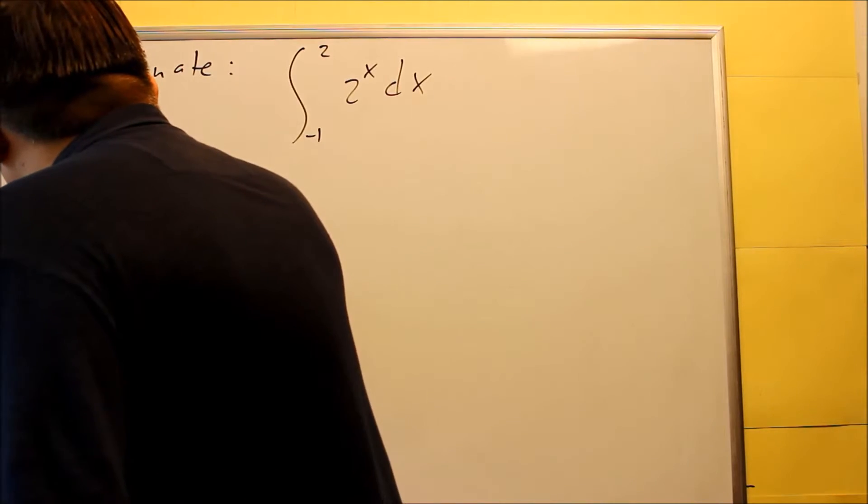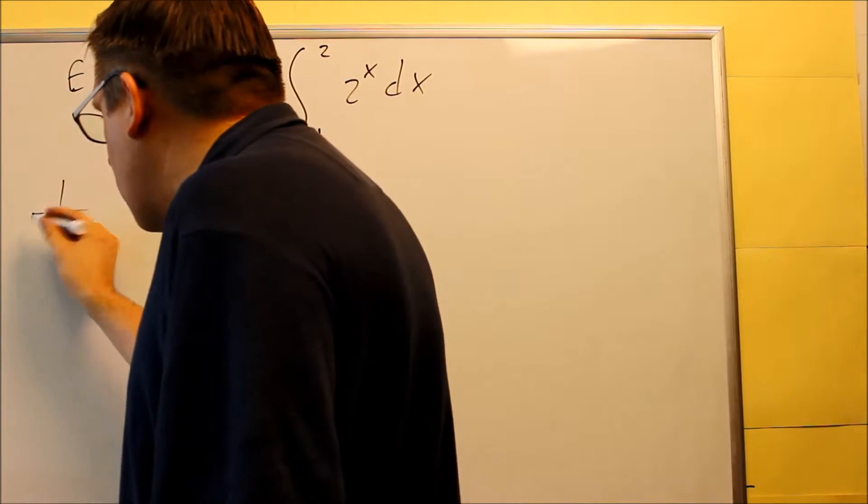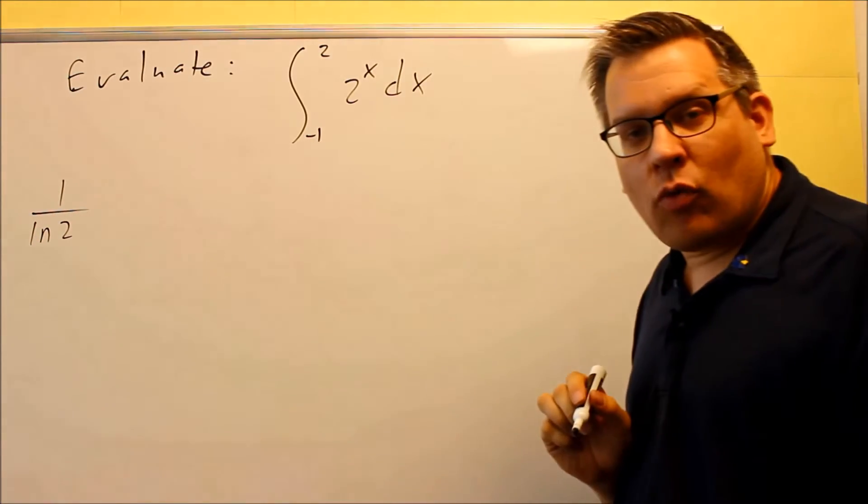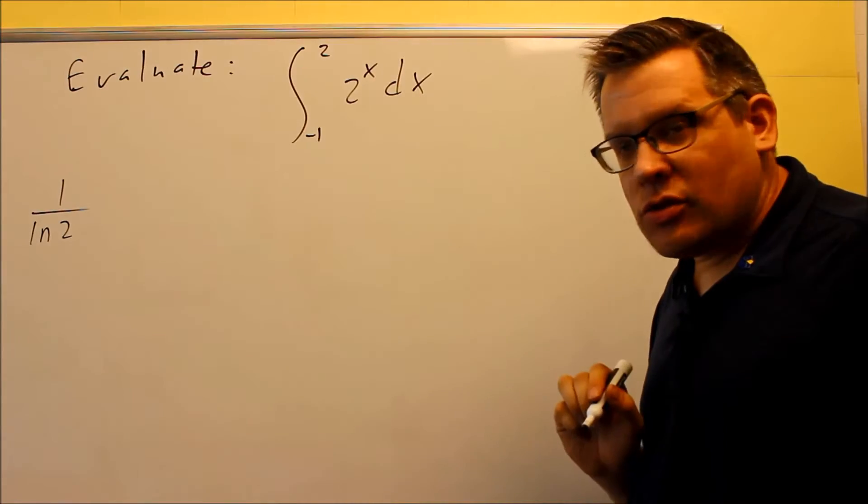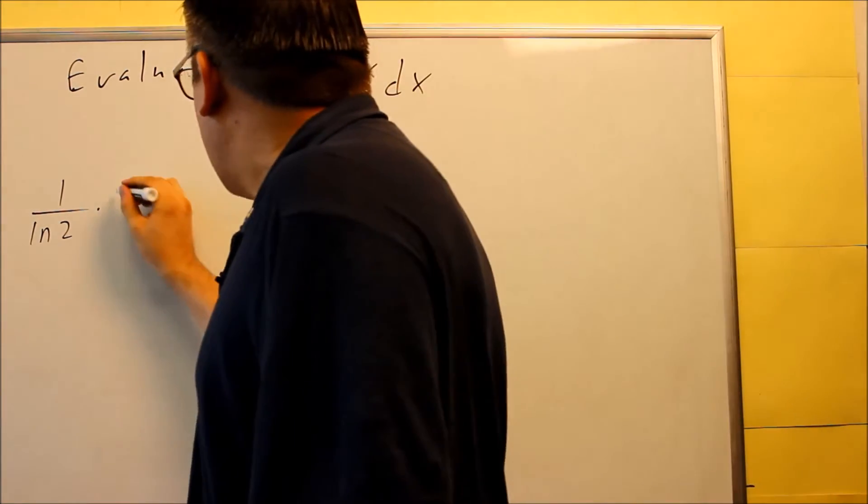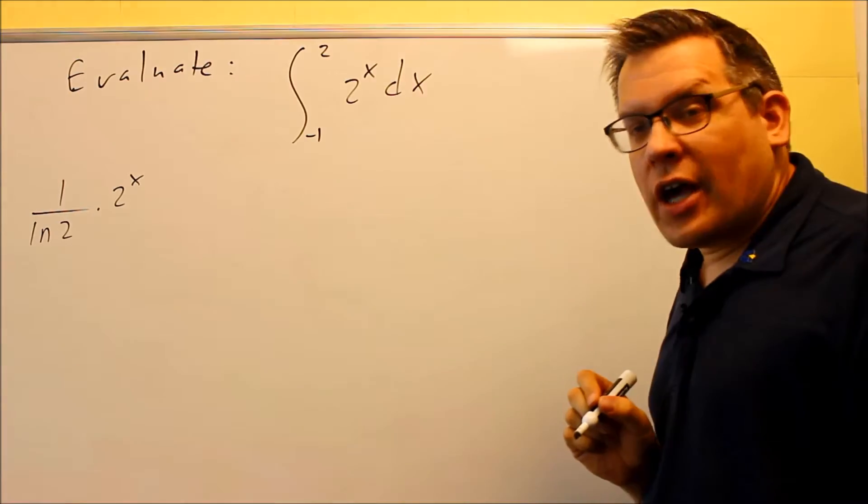So when you use the formula, it's going to look like this. You're going to do 1 over k, which is 1. And then natural log of a. So I have 1 over 1 times ln 2. And then I'm going to multiply this by the original and we have 2 to the x.